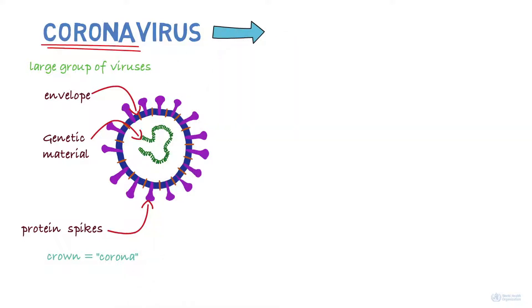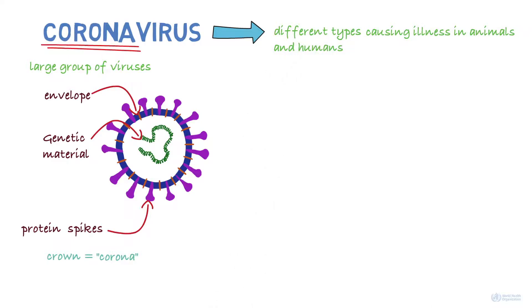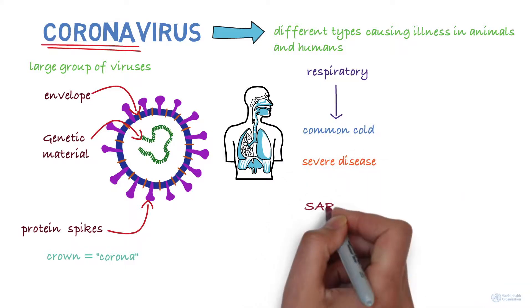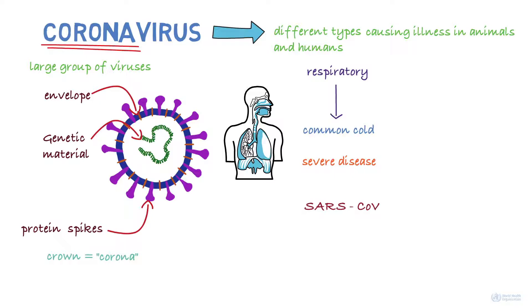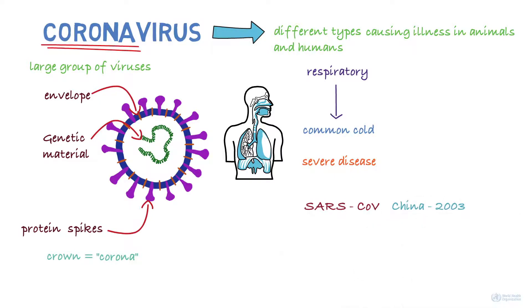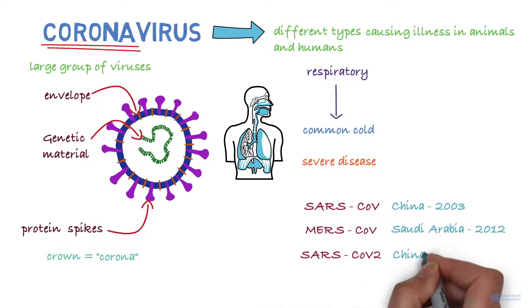There are different types of coronaviruses that cause illness in animals and humans. In humans, coronaviruses can cause respiratory infections ranging from the common cold to more severe diseases. These include the severe acute respiratory syndrome coronavirus first identified in China in 2003, the Middle East respiratory syndrome coronavirus that was first identified in Saudi Arabia in 2012, and SARS-CoV-2, the name of the virus that causes COVID-19 that was first reported in December 2019.